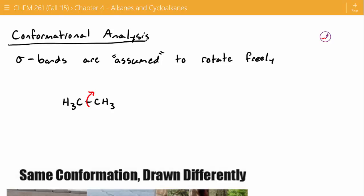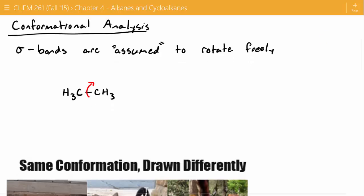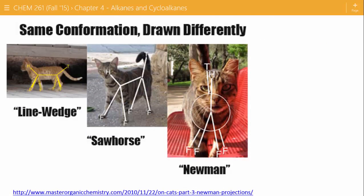Chemists study conformational analysis using a variety of drawing techniques. There's a picture from Mastering Organic Chemistry — a website offering tutoring services — that has a section called 'Everything I Learned From Chemistry I Learned From Cats.' We've got three different cats viewed from different perspectives. The one on the left is our traditional bond line or line wedge formula. We also have the sawhorse projection, and today we'll talk about the Newman projection, which is the head-on approach of these carbon-carbon bonds.